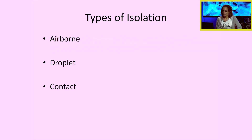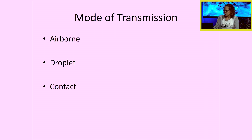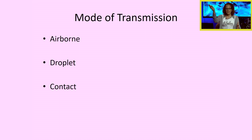There is airborne isolation, droplet precautions, and contact precautions or isolation. These types of isolation are really tied to their mode of transmission. For example, with an airborne mode of transmission, these types of infections have droplets so tiny that when the patient coughs or sneezes, the infectious material is actually suspended in the air for a certain period of time where another individual can breathe in that infection. That's an airborne type of transmission.